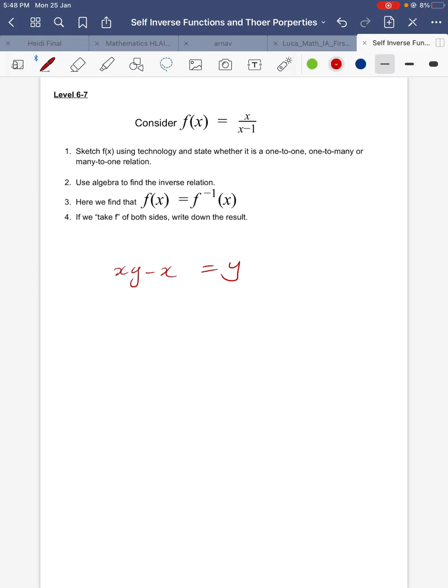And then we factorize out the x. And then we divide through. Then we write it in functional language, which is exactly the same as f of x, right? So we've kind of proved that this is a self-inverse function. So f(x) equals x over x minus 1 is definitely a self-inverse.